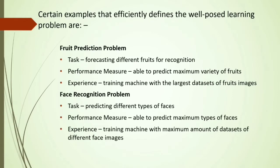Let us understand more with the help of an example. In our example of a fruit prediction problem, the task is forecasting different fruits for recognition — our main task is for the machine to recognize different types of fruits. The performance measure is that when we place a maximum variety of fruits in front of it, it should be able to predict the maximum variety. The experience through all this training is that the machine should learn from the largest datasets of fruit images.